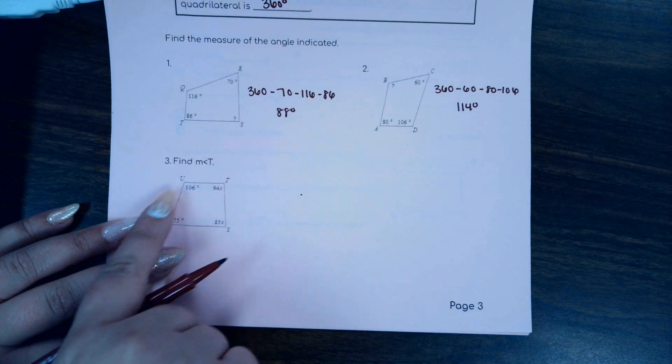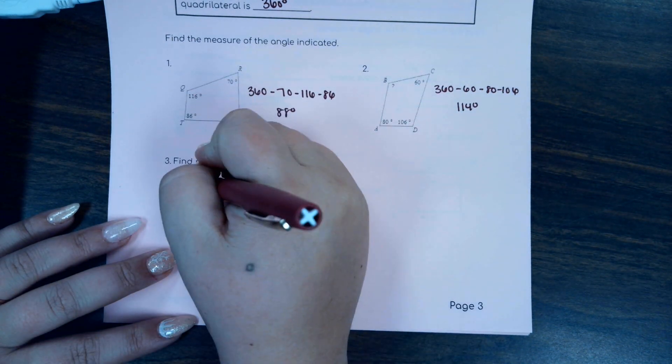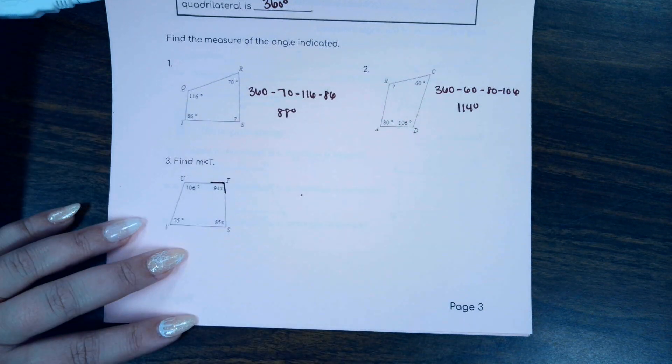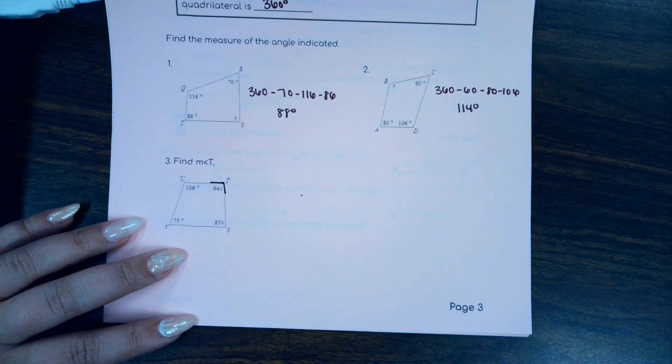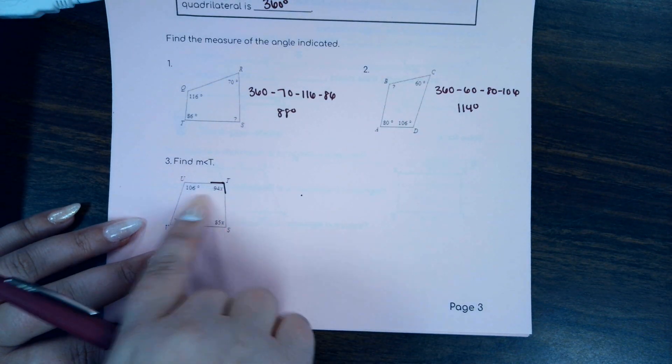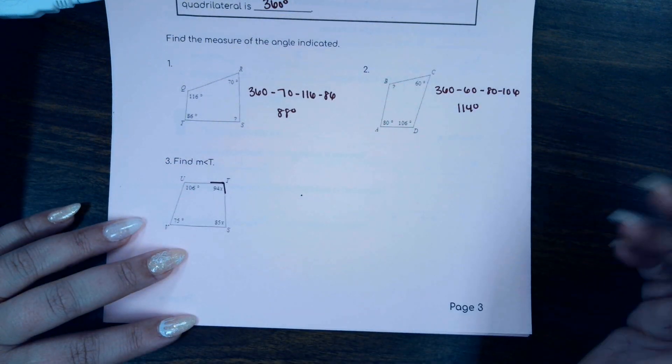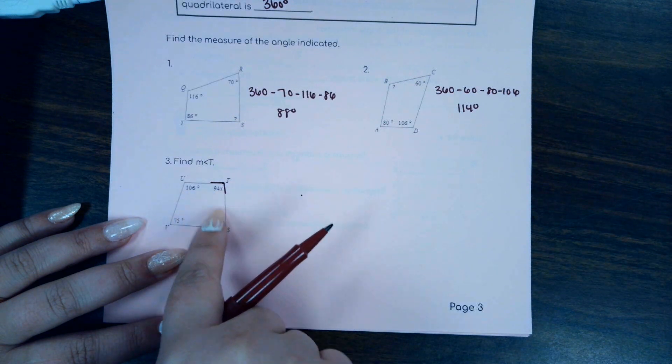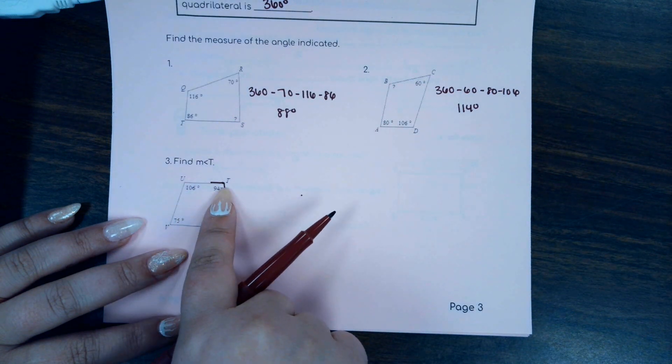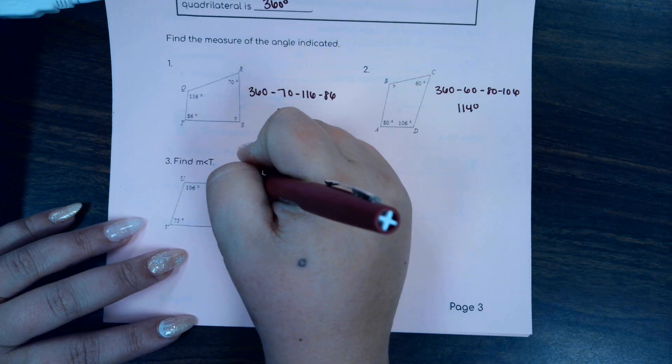So number three, we're trying to find the measure of angle T. Well, angle T is right here. As you can see, that angle measure is 94X. So to get just a number of degrees there, we've got to first find out what X is, right? Well, we know the sum of the interior angles in a quadrilateral is 360. So let's write that equation.